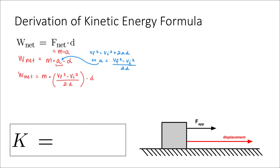And then we see here that we have a displacement in the denominator and a displacement outside here. And so those displacements will cancel, meaning that the net work on an object is m times, and then just vf squared minus vi squared over 2.